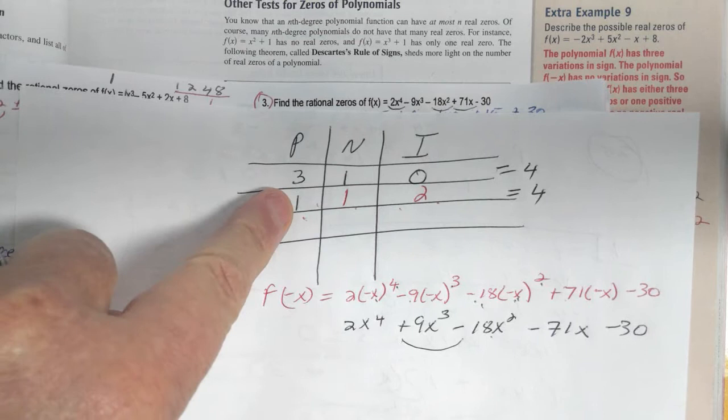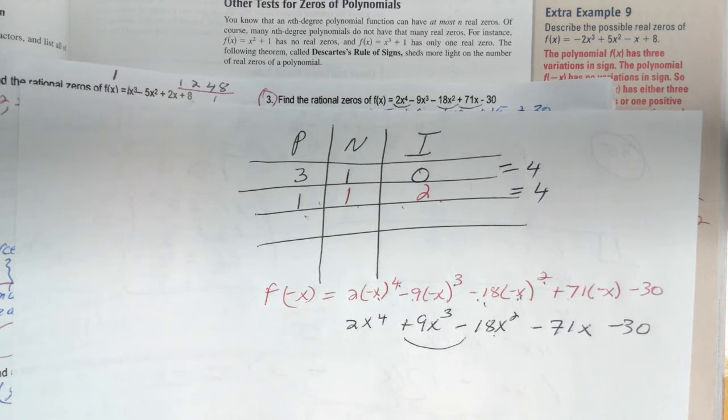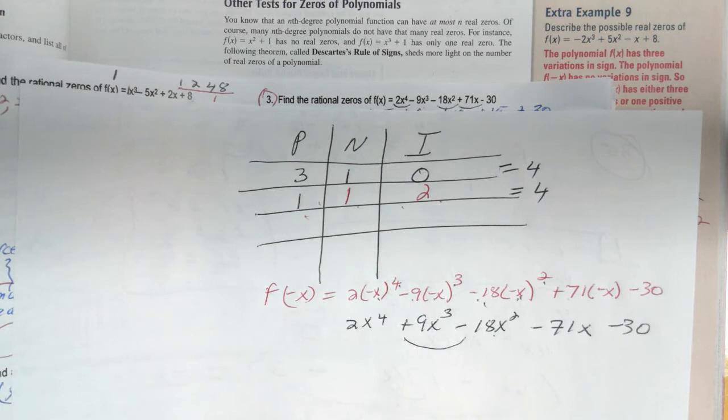So it tells you there's definitely a negative root there, but there could be three positives, or two of them could be imaginary with one positive. Descartes' Rule of Signs just tells you what kind of roots are going to be possibilities. I hope you enjoyed the video.